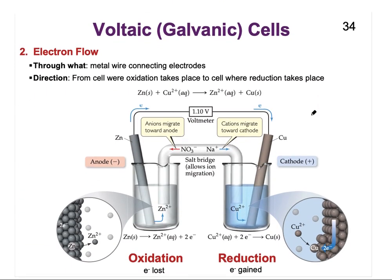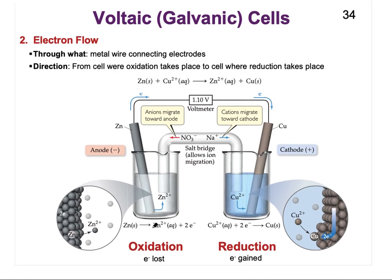On the left-hand side where oxidation took place, we were releasing electrons, while on the other side we are gaining electrons. Wherever electrons are being produced, they travel through the wire to the other side where they are needed as reactants. Electrons are always released at the anode and travel to the cathode. The electron flow occurs through the metal wire connecting the two electrodes — from the anode to the cathode.